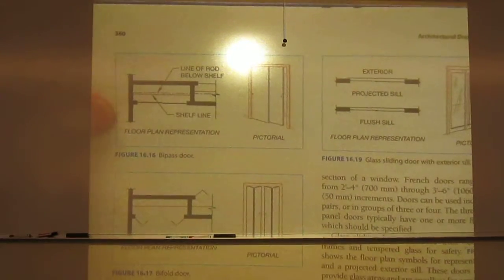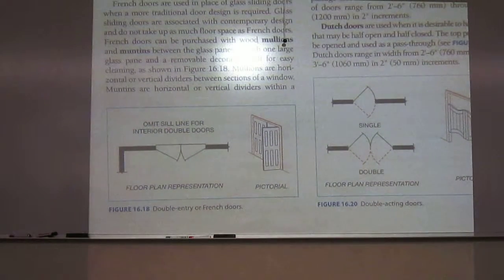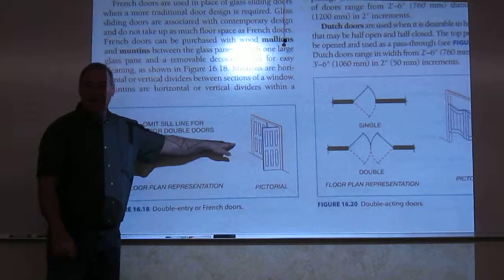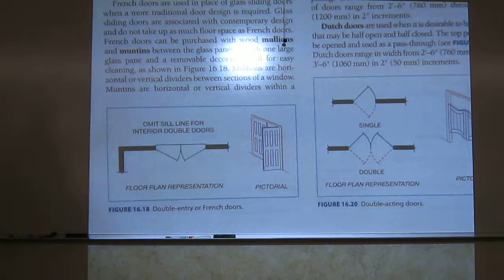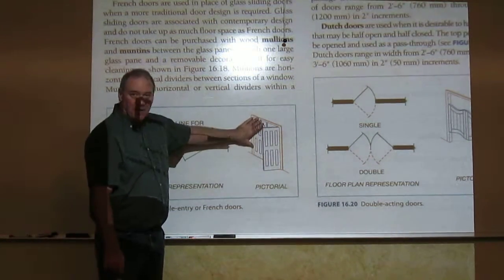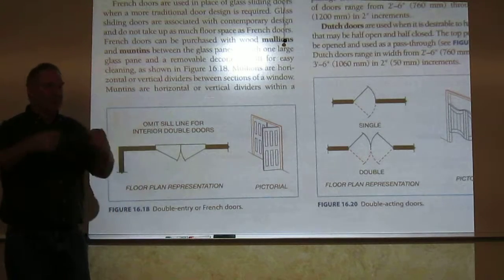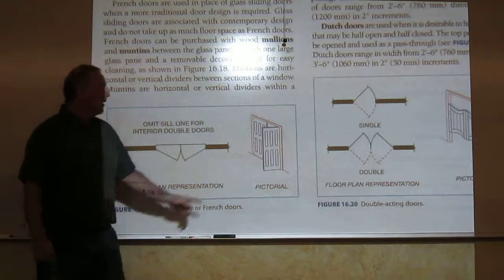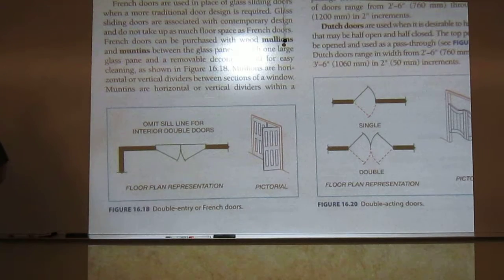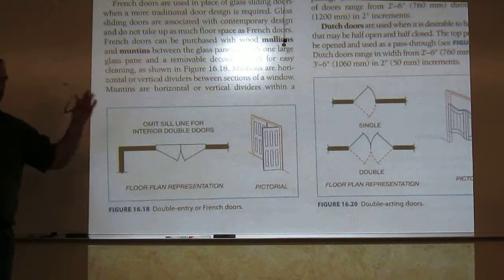We've got closet doors, then on the bottom of page 360 — pictorial doors. We typically call those French doors. Most French doors have solid glass on one side and one frame that opens. Some are double-opening — if so, show two swings; if single, just one. It's generally bought as one unit. You plan for a five- or six-foot space, call it out as 'French door,' then they go buy it and the framers have the whole report.